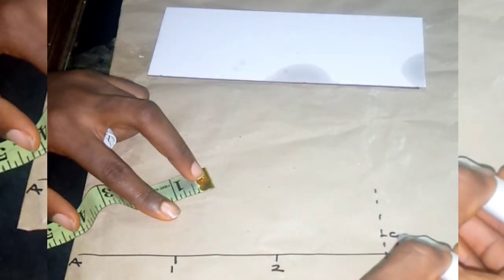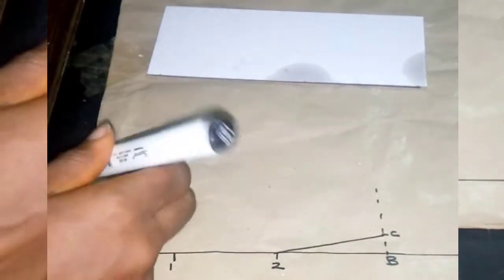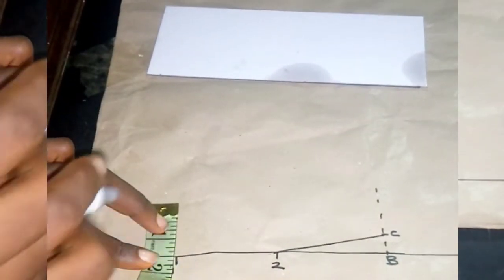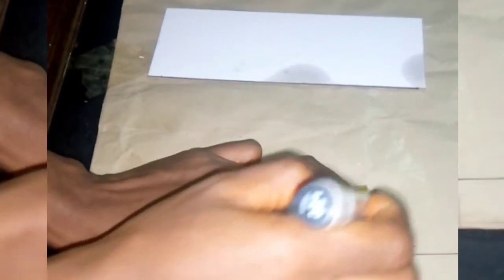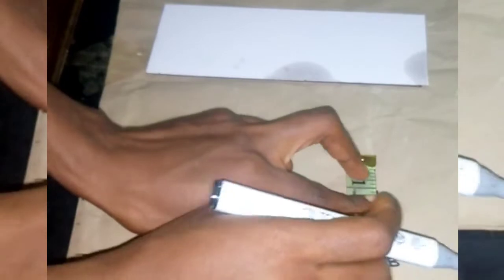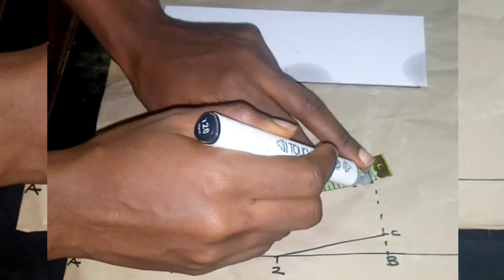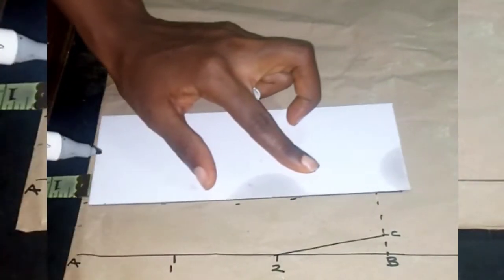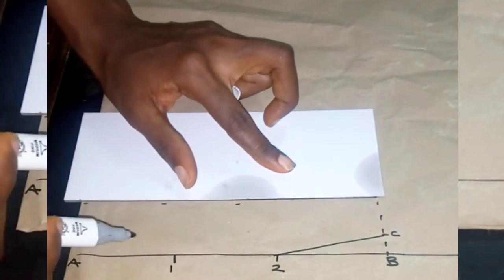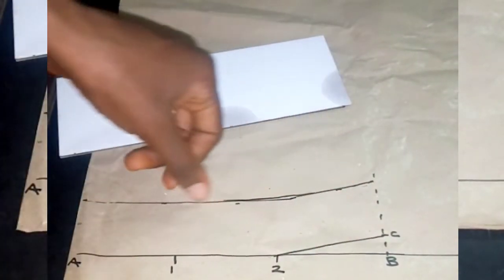After that, you input the height of the collar stand. I'm making mine 0.5 inches, so you measure 0.5 inches all through. After measuring 0.5 inches all through, then you connect it. You can use a French curve if you are not good at using hand. The idea is to create a bend at that point, a curve line at that point.